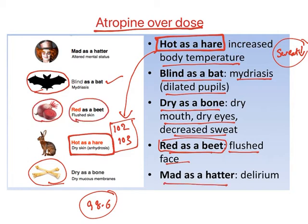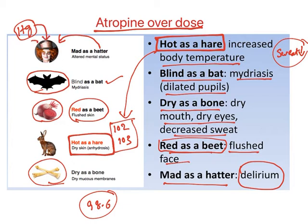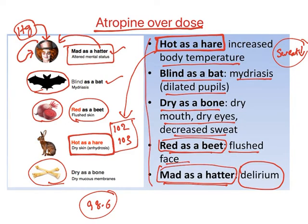The last sign is 'mad as a hatter.' CNS effects cause mental agitation and delirium. This phrase originated because in the 17th and 18th centuries, hats were made using mercuric nitrate. Mercury present in the hats exposed hatmakers' brains to mercury, causing altered mental status. Atropine has similar effects. These are all atropine overdose effects.